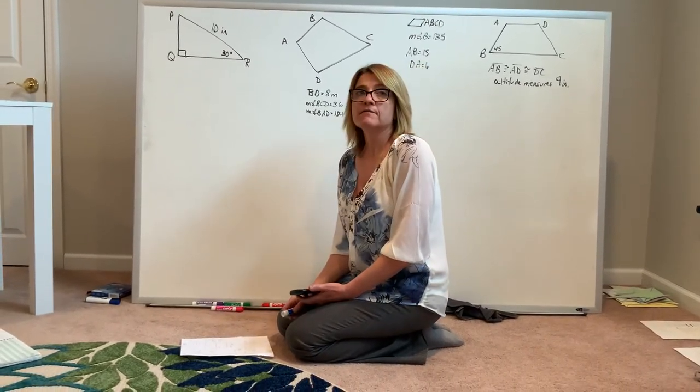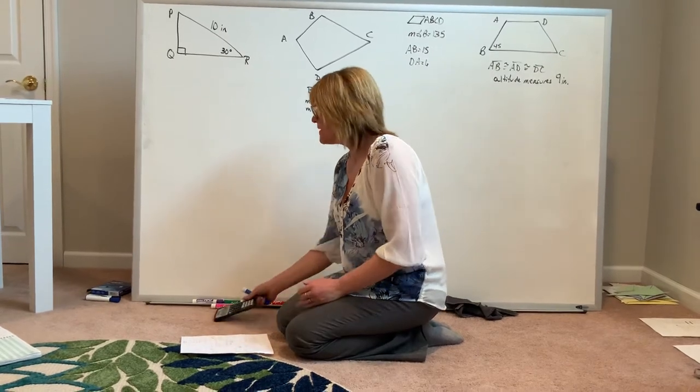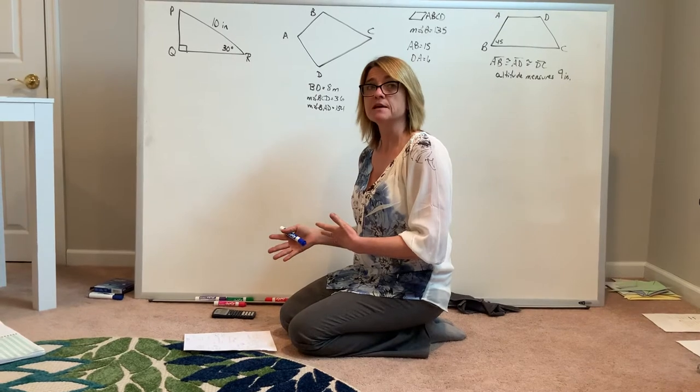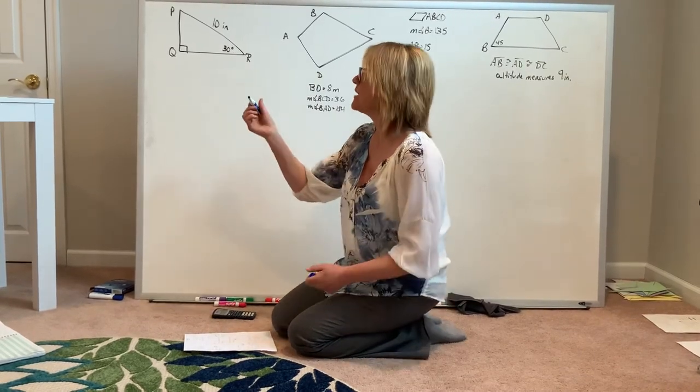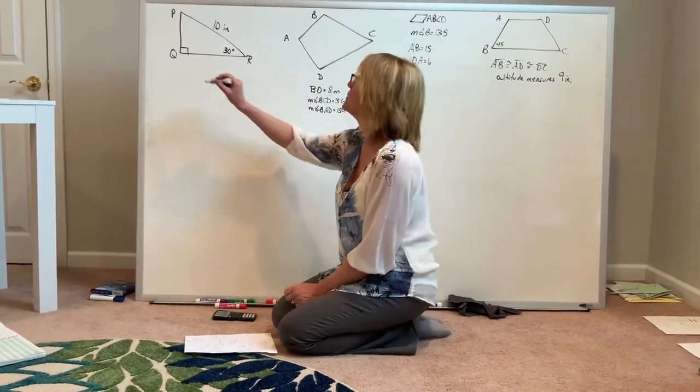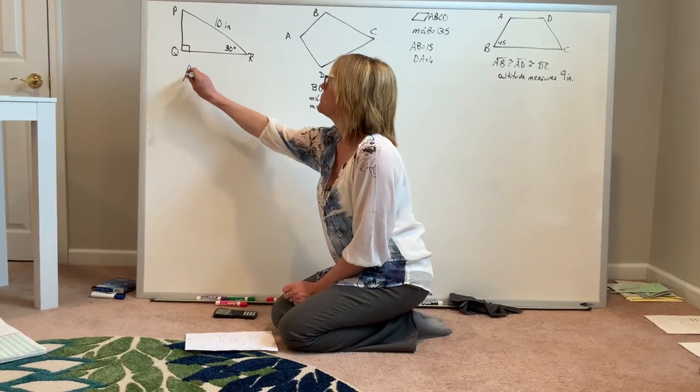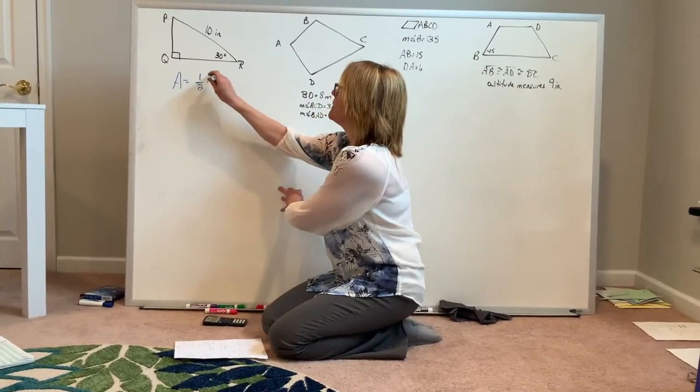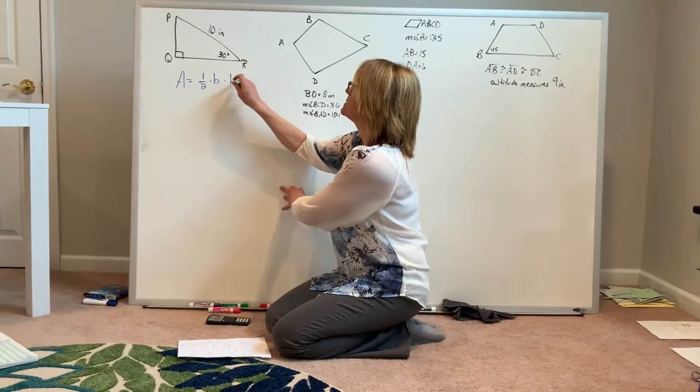We're going to be calculating the area of each of these figures. My recommendation is that the first thing you do is always determine what type of shape it is and write down the formula for yourself because that gives you an outline to work with. For my triangle, the area of the triangle is equal to one half times the base times the length of its height.